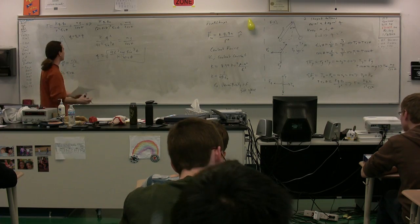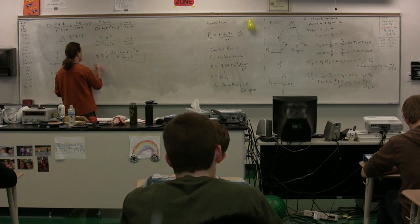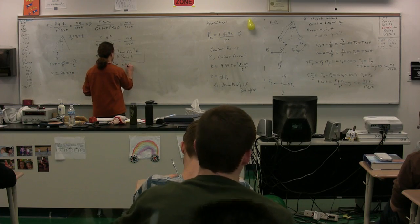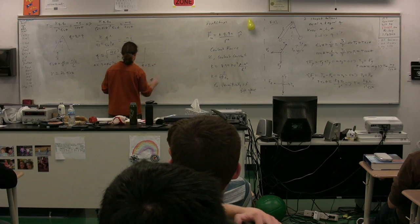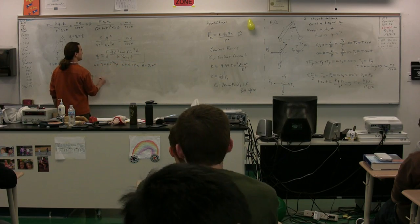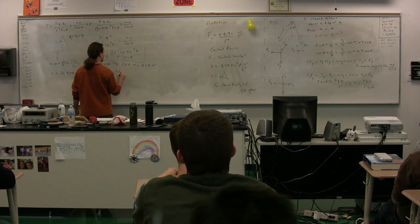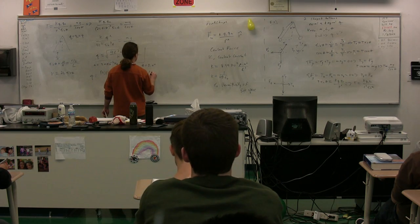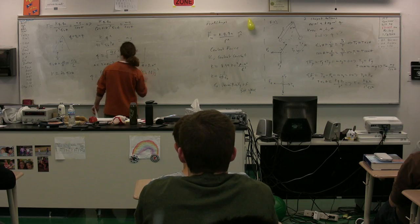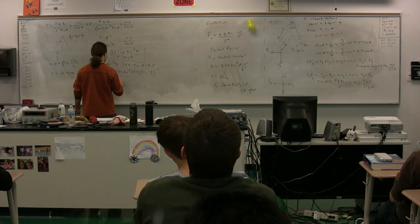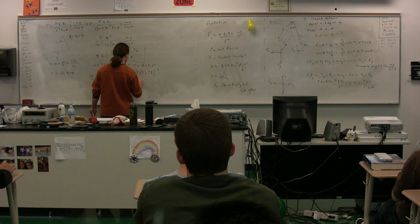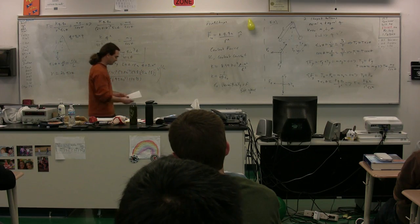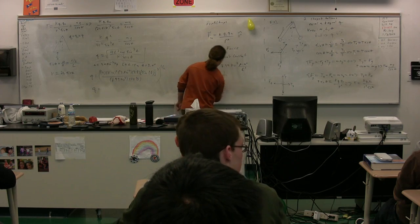Solving for Q, we get: Q equals the square root of 4L² mg sine³θ divided by K cosine θ. Let's put in some numbers: mass equals 3.0 × 10⁻² kg, L equals 0.15 m, theta equals 5.0 degrees. So Q equals the square root of [4 × 0.15² × 3 × 10⁻² × 9.8 × sin³(5°)] divided by [8.99 × 10⁹ × cos(5°)].